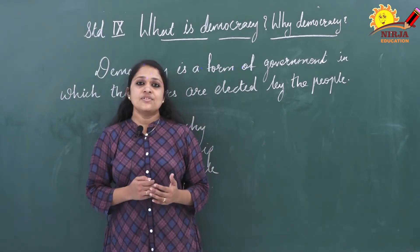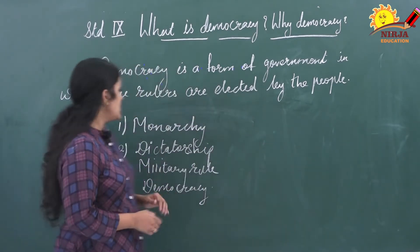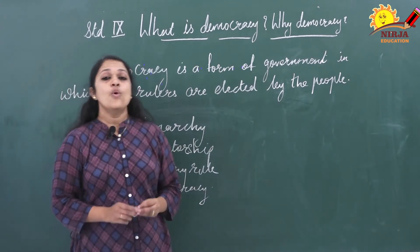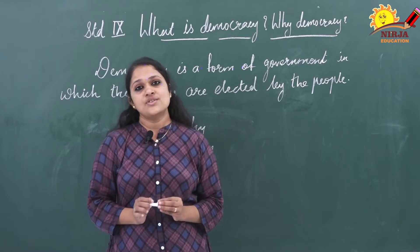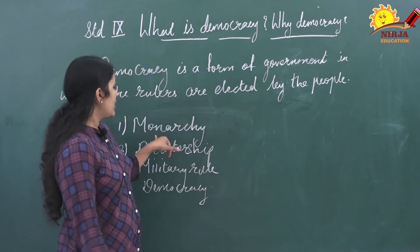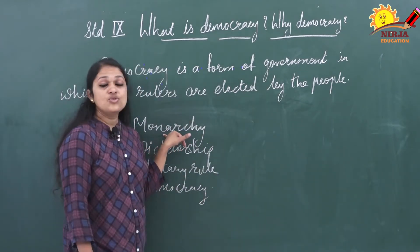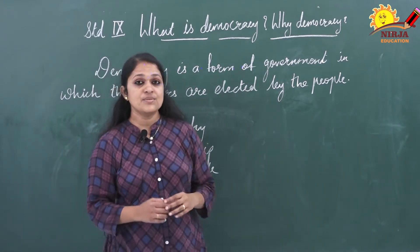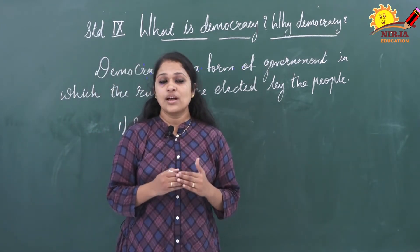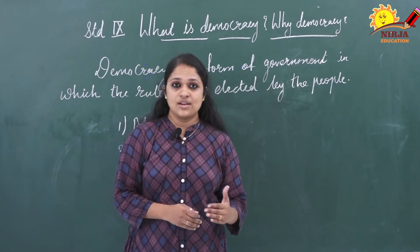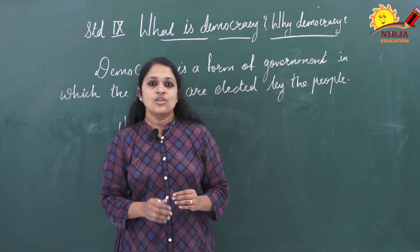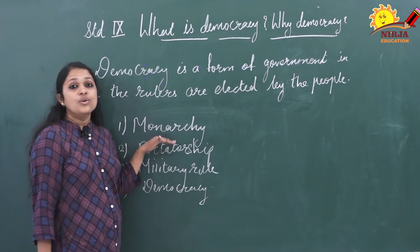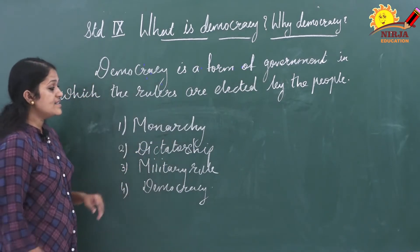There are different types of government. First is monarchy. Monarchy is a kind of government where a monarch is a hereditary ruler. Hereditary means if the king dies, after that his son rules. So it is called a hereditary ruler. Second is dictatorship.